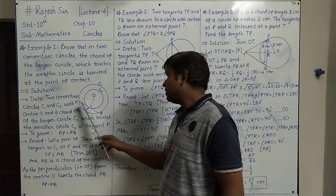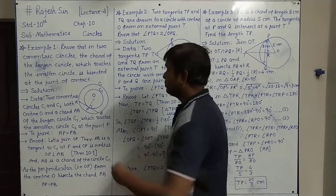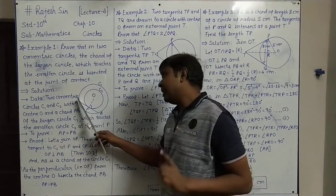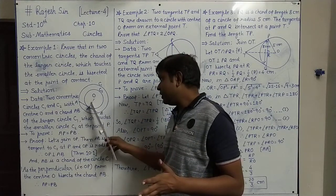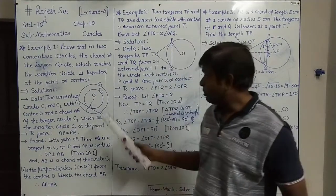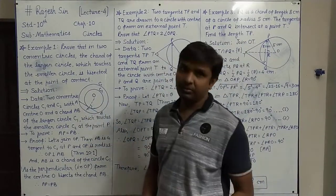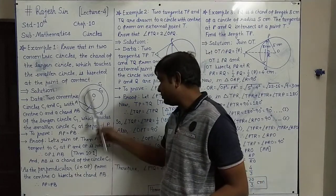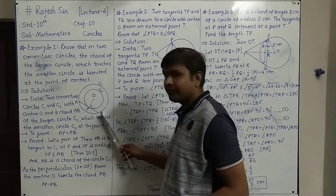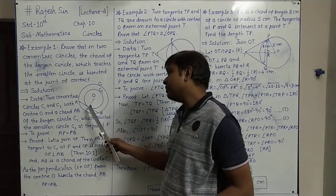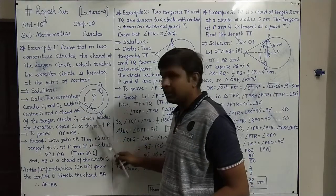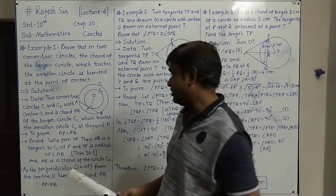Now from the bigger circle C1's point of view, AB is a chord and O is the center. So OP is the perpendicular drawn from the center to the chord. From the theorem we studied in Standard 9, if a perpendicular is drawn from the center to the chord, it bisects the chord.